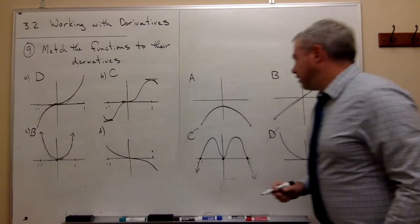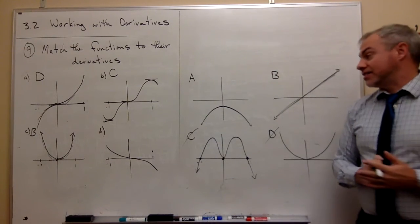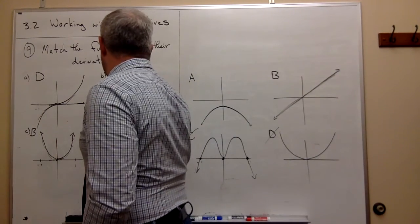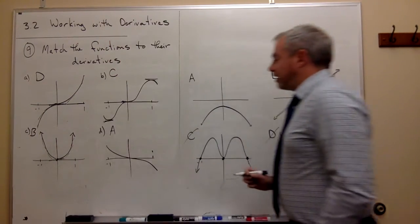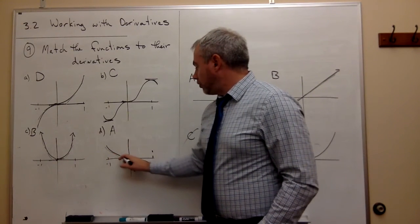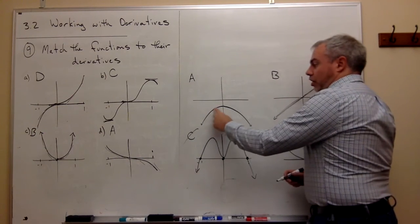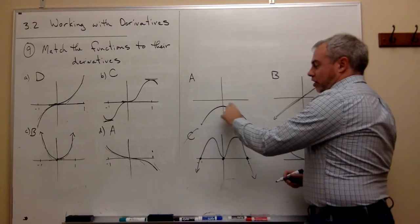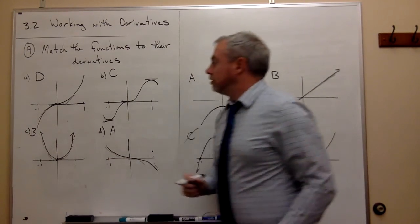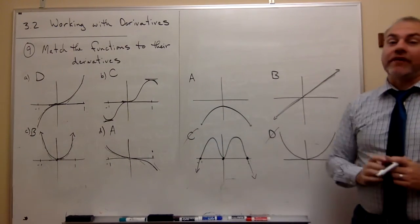And then finally, just based on process of elimination, I guess we know what the last one is. The last one is going to be A. But we can kind of see that that's true. All of the slopes, all the way along this graph, are negative slopes. It's always negative. The derivative is always negative. So it must be A. And that's how we match a function to the graph of its derivative.